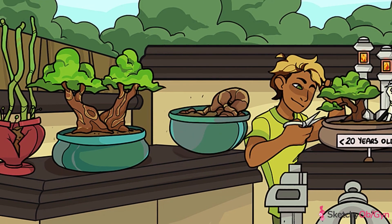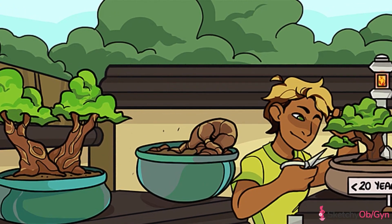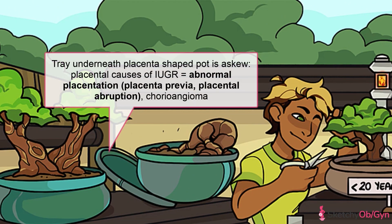Placental causes are those that compromise the integrity of the placenta, which in turn affects blood flow to the fetus. This includes diseases within the placenta, such as chorioangioma, symbolized by this gnarled root growing out of a placenta-shaped pot. Abnormal placentation — meaning the placenta has not implanted normally — can also compromise blood flow. For example, with placenta previa, the placenta overlies the cervical os and derives most of its blood supply from the lower uterine segment, where blood flow is inferior. Any placental abruption or hematoma can also affect the surface area through which the fetus is perfused.